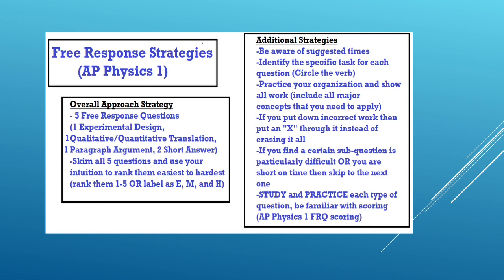Additional strategies. Be aware of suggested times. Identify the specific task for each question. Circle the verb. Practice your organization and show all work. Include all major concepts that you need to apply. If you put down incorrect work, then put an X through it instead of erasing it all. If you find a certain sub-question is particularly difficult or you are short on time, then skip to the next one. Study and practice each type of question. Be familiar with scoring, AP Physics 1 FRQ scoring.